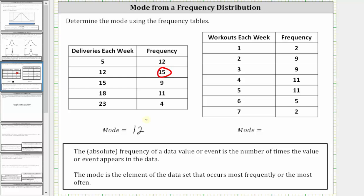Looking at the second table, in the first column we have workouts each week, in the second column we have the frequency.